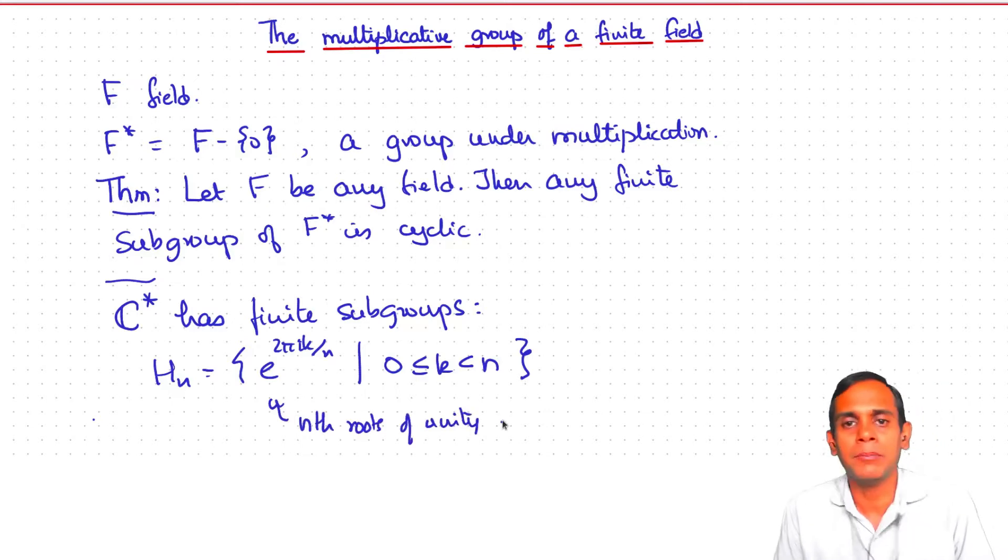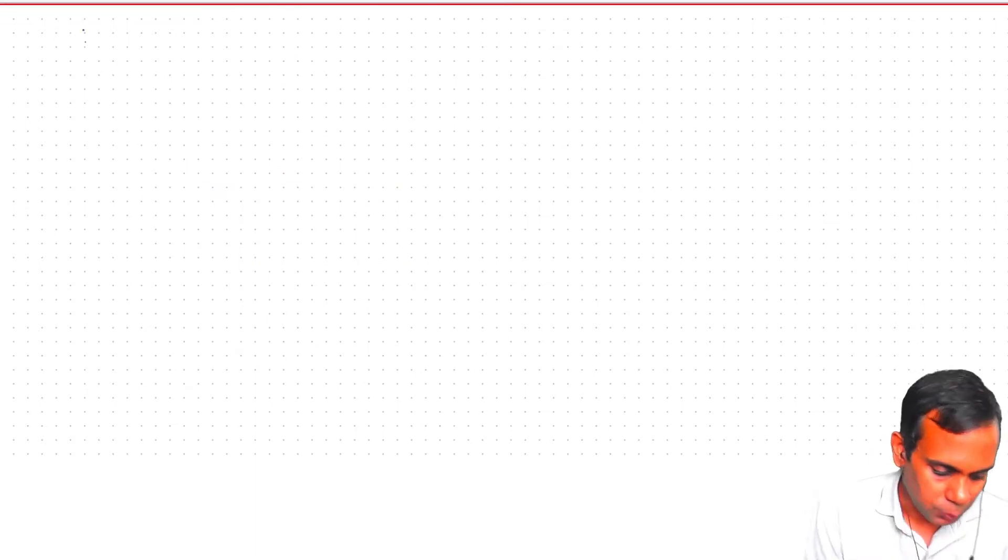In fact, when we prove this theorem, we will see that it is a very similar situation there. If we have a finite subgroup of F star of order n, then it consists precisely of nth roots of unity. So, let us prove the theorem.